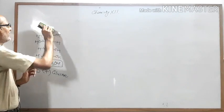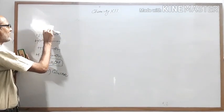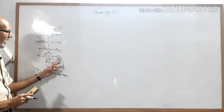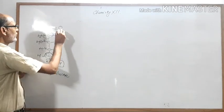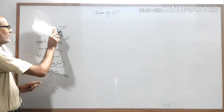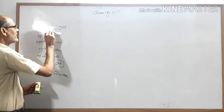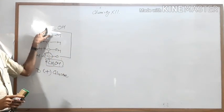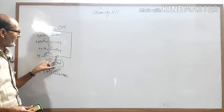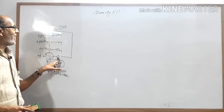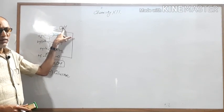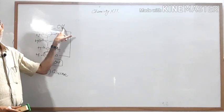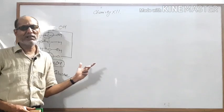We draw the aldehyde group as C–H=O. The H from carbon number five is removed and moves to the aldehyde oxygen. This changes the double bond to a single bond, and one bond connects this oxygen to carbon number one and carbon number five through an ethereal oxygen. The aldehyde group is thus converted into an alcohol group.